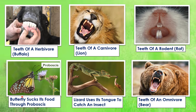Next is the butterfly. Butterflies suck their food through a tube-like mouth part called a proboscis. Some animals like lizards use their tongue to catch insects. Omnivores are those animals that eat both plants and animals, so they have front teeth for tearing and biting and molar teeth for chewing.